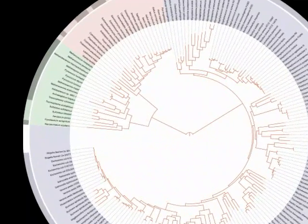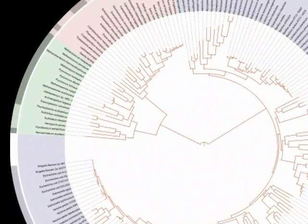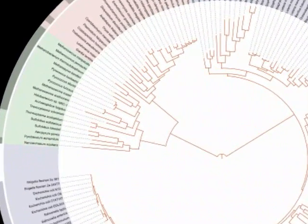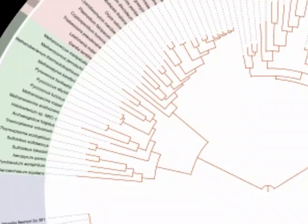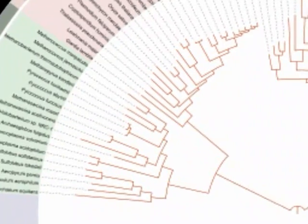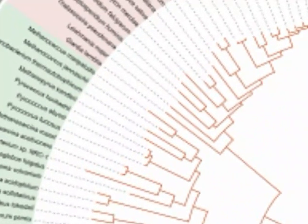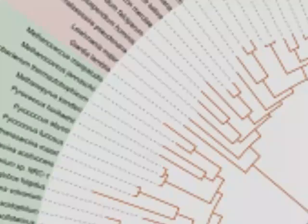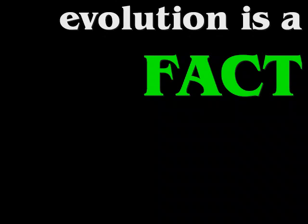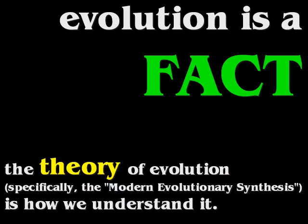Evolution is change in genetic frequencies over time, and this process explains the similarities and differences amongst all living things. While scientists may disagree with some of the underlying details of how evolution works, there is no debate whatsoever in the scientific community that evolution is a fact, and the theory of evolution is how we understand it.